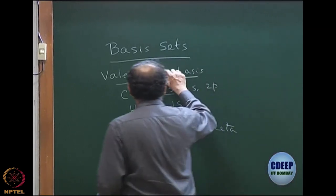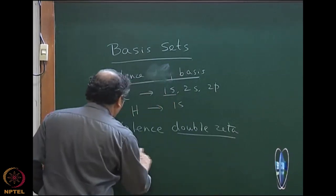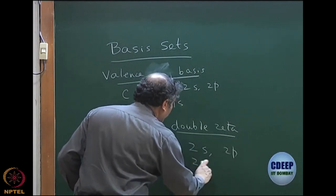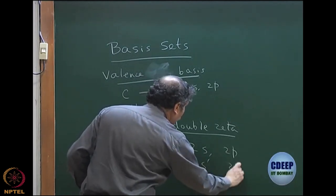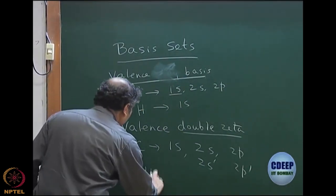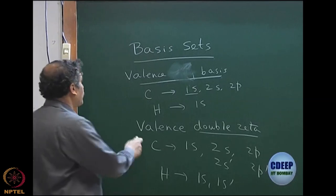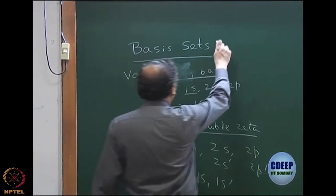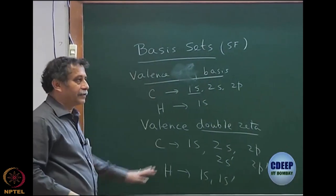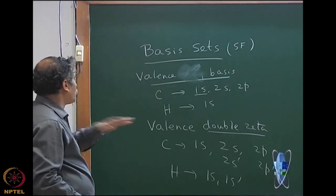Then you have a valence double zeta, which means carbon would have 1s and the actual valence 2s, 2p doubled as 2s', 2p'. So you have 2s, 2p, 2s', 2p', and for hydrogen this will also be 1s, 1s', because hydrogen 1s itself is valence. I am first describing what the atomic orbitals — the Slater-type functions — are.